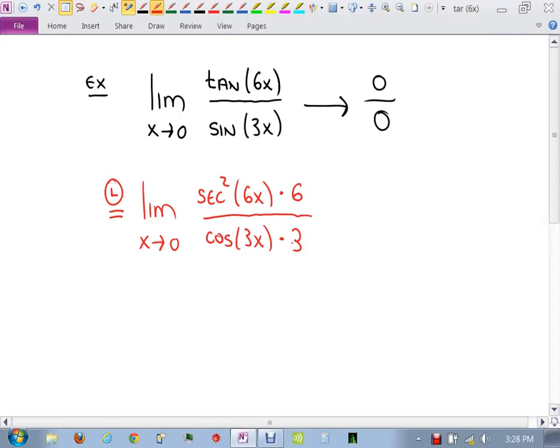Now go ahead, try it. Remember, secant is 1 over cosine, isn't it? So what is secant of 0? Well, cosine of 0 is 1, isn't it? So secant of 0 is 1. 1 squared is 1. So you get what on top there? 6. And then again, cosine of 0 on the bottom is 1. 1 times 3 is 3. The answer is 2. Isn't that nice?